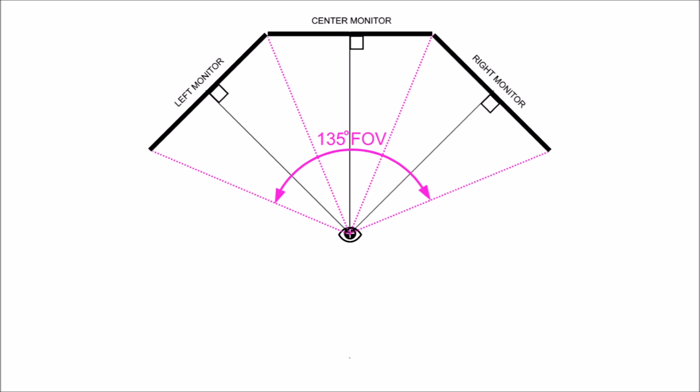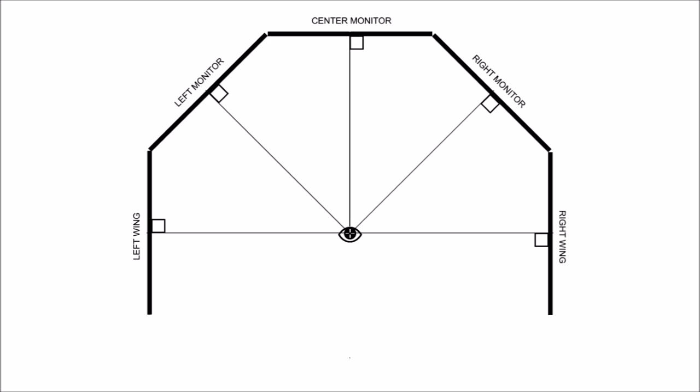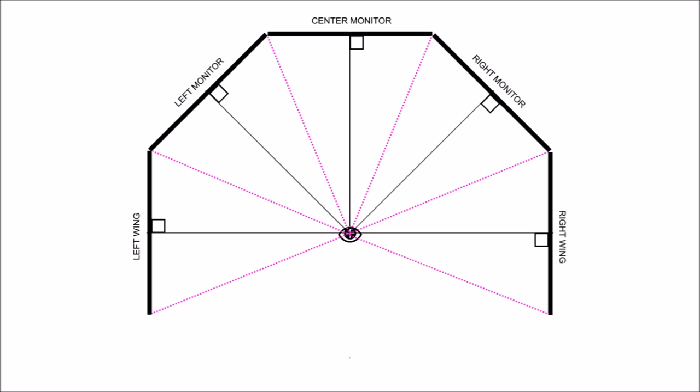Given enough CPU and GPU power, we're not limited to only three monitors — X-Plane will support a large number. A good possibility if you wanted more visual field of view is to use an additional two monitors to create a five-monitor set. With five monitors each with a 45-degree field of view, it gives a total field of view of 225 degrees, which means you can look out the wing and actually see about 22.5 degrees behind the wing line.